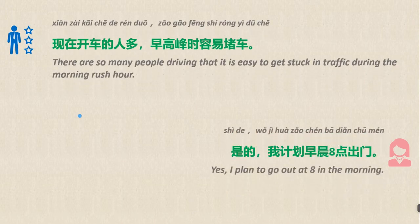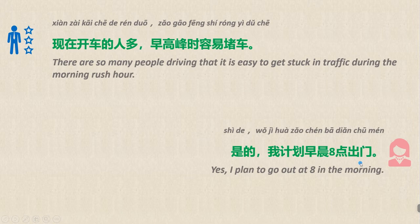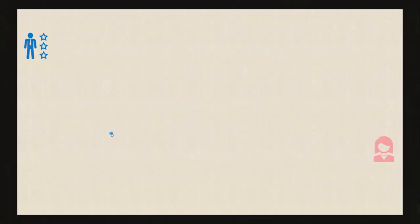Another conversation, 另一段对话. It's a little complicated. 现在开车的人多。早高峰时容易堵车。是的，我计划早晨八点出门。 开车 means 'driving'; 人多 means 'so many people'; 早高峰 means 'morning rush hour'; 容易堵车 means 'get stuck in traffic'; 是的 means 'yes'; 计划 means 'plan'; 早晨 means 'morning'; 八点 means 'eight o'clock'; 出门 means 'go out.' Read after me: 现在开车的人多。早高峰时容易堵车。是的，我计划早晨八点出门。非常好。